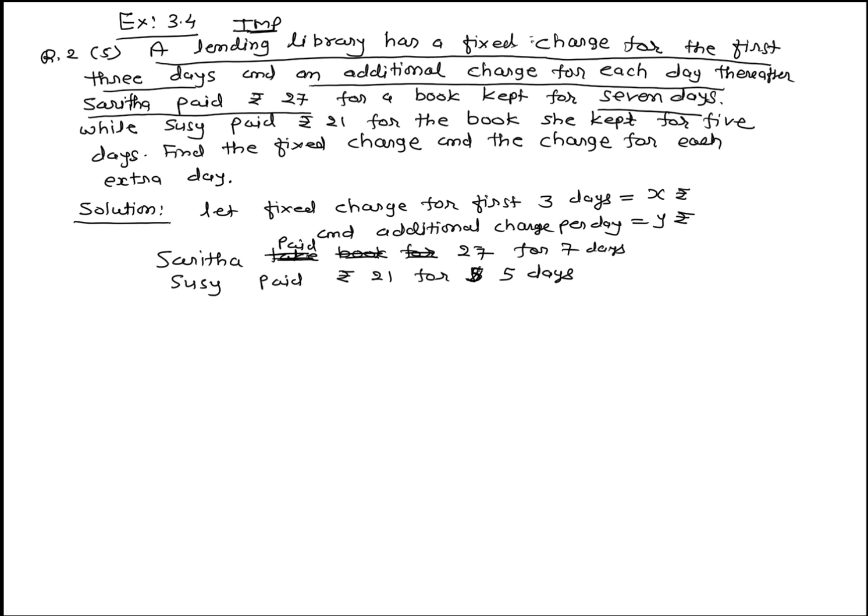The library book has a fixed charge for the first 3 days and additional charge after. Saritha took 7 days and paid 27 rupees, while Sushi paid 21 rupees for 5 days. So what is the charge for the fixed 3 days and the charge of each extra day?